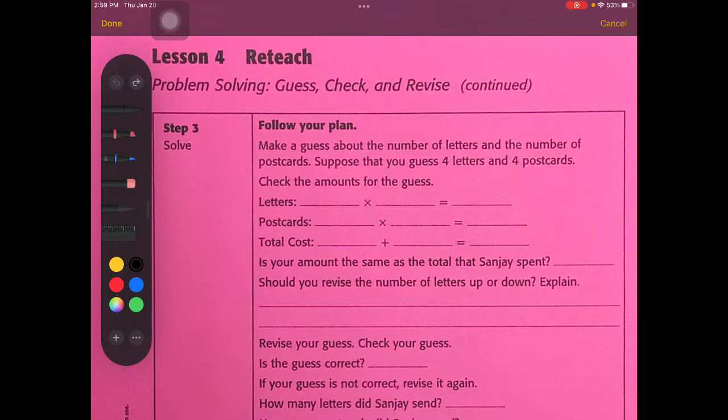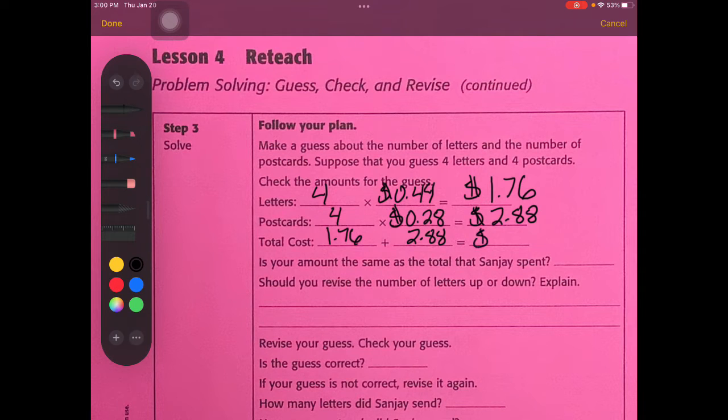Next thing you can do is make a guess about the number of letters and the number of postcards. Suppose you had four letters and four postcards. Let's do a guess and check and see what we get. So we would have four times 44 cents, and that would work out to be $1.76. And on postcards, we had four at 28 cents, that multiplied out would equal $2.88. So the total cost would add $1.76 plus $2.88 to equal $2.88. Is the amount the same as the total he spent? The answer is no. We need to adjust the letters down because the total is too much.